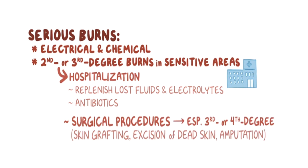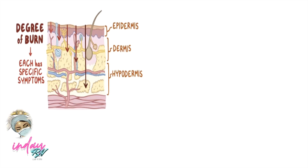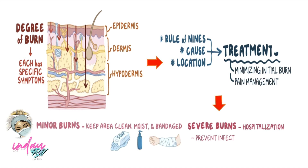To recap: a burn is an injury involving protein denaturation and cellular damage in the skin, caused by extreme heat or cold, electricity, chemicals, or radiation. The degree of burn is determined by whether the epidermis, dermis, or hypodermis are affected, and each degree has specific symptoms. The rule of nines, the cause, and the location of the burn help determine treatment. Minor burns require keeping the area clean, moist, and bandaged, while severe burns may require hospitalization, infection prevention, and fluid management.